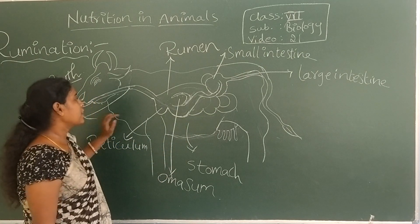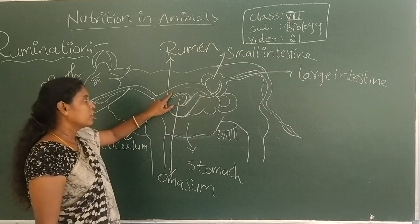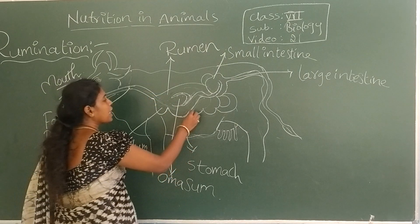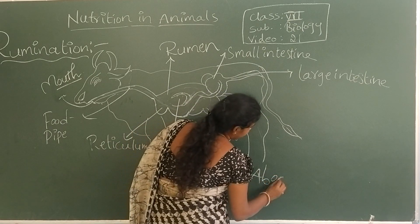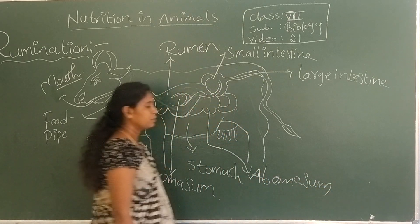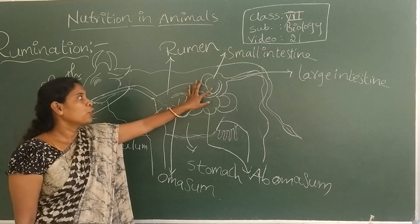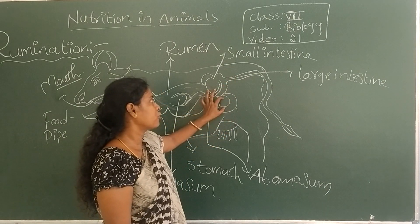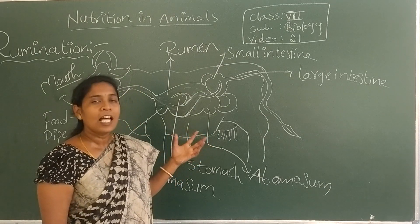The stomach has four parts. The first part is called reticulum. The second part is called rumen, which is a very large chamber. The third part is called omasum, and the fourth and last part is called abomasum. This stomach is connected to the small intestine, which is then connected to the large intestine. This same digestive system can be found in other ruminant animals as well.